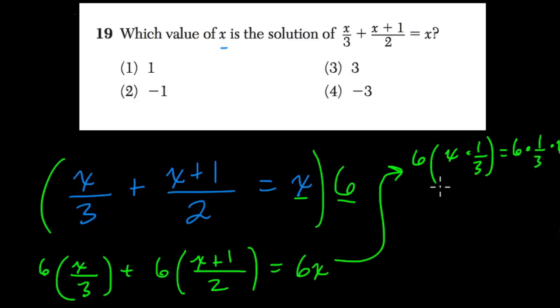6 times 1 third is 6 times 1, which is 6 over 3. 6 over 3 is 2. So that's 2x. So now I've changed this term to 2x.